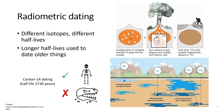Each radioactive isotope decays at its own rate, meaning different isotopes will have different half-lives. You can have atoms with half-lives of less than a second to others with half-lives of over a billion years. The isotopes with longer half-lives can be used to date older things, whereas isotopes with shorter half-lives can be useful for dating younger things.